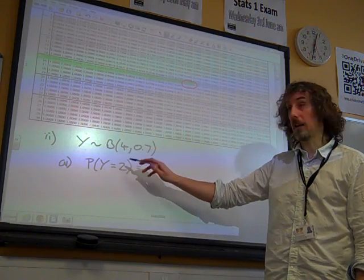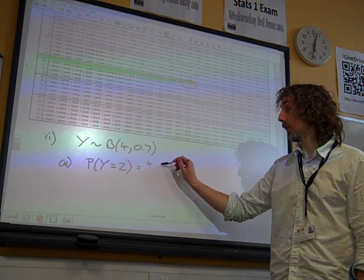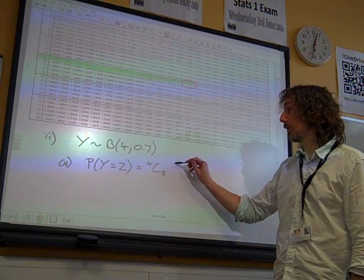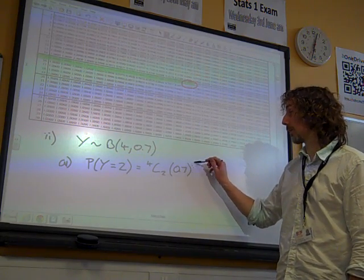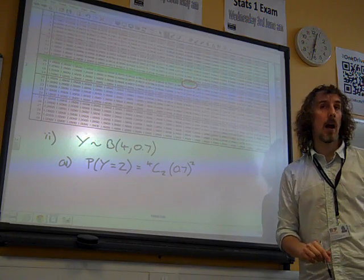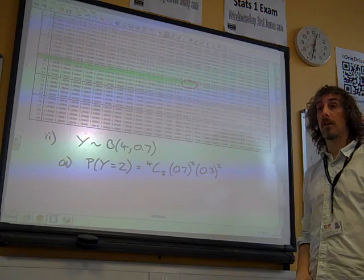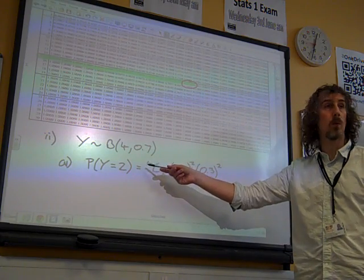It's n c r, 4 c 2, and that means two successes, so 0.7 squared, and two failures, so 0.3 squared as well, because the total number of trials is 4.